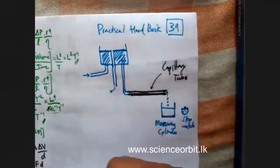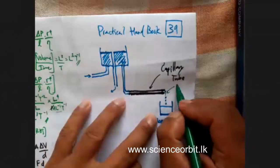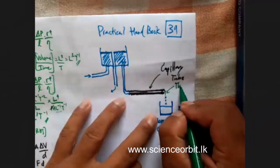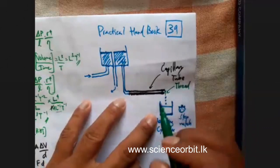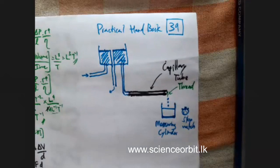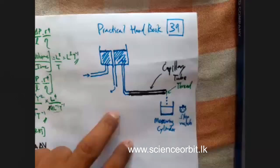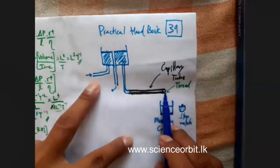This is a thread — a cotton null thread. The reason for using the thread is to avoid excess pressure building at the exit point of the capillary tube.